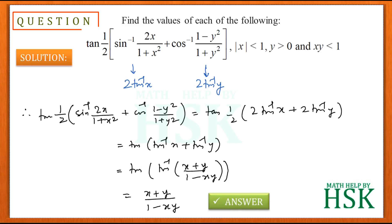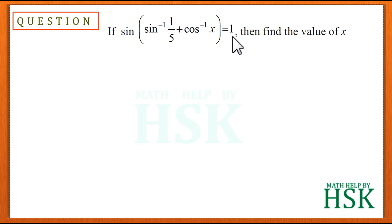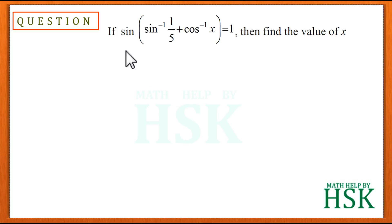Now taking question number 14 of Exercise 2.2 from the chapter on inverse trigonometric functions. The question is: if sin(sin⁻¹(1/5) + cos⁻¹(x)) = 1, find the value of x.